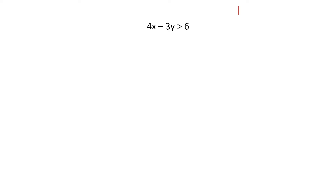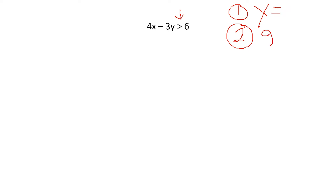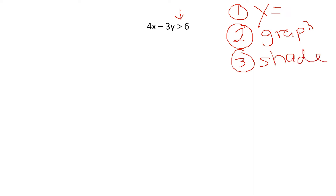Your first step is to put it into Y equals form. Now I know this isn't an equal sign — we'll come back to that in a second. Your second step is going to be to graph it. And then your third, because it's an inequality, we're going to need to shade part of it.